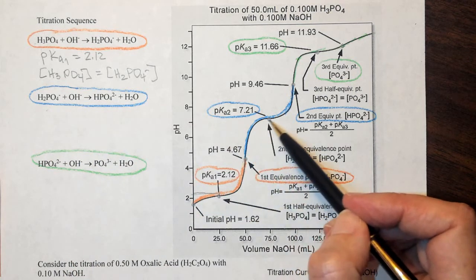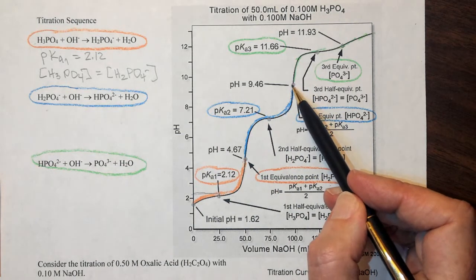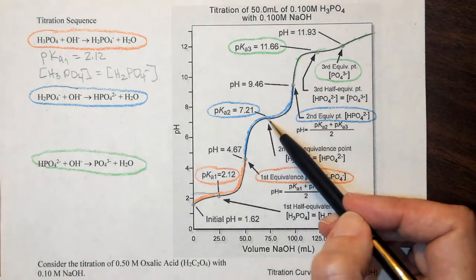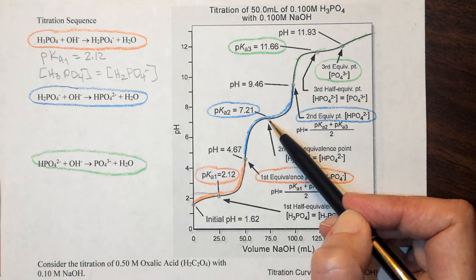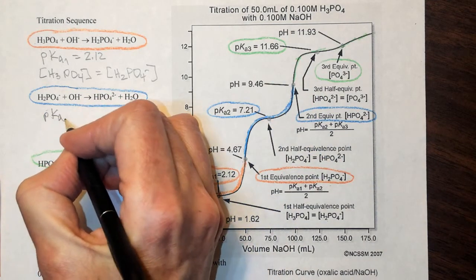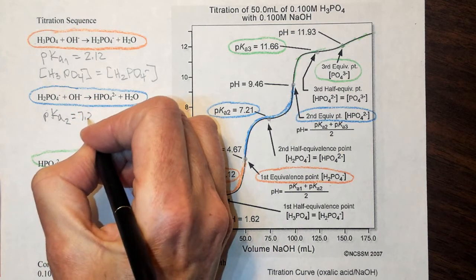So the blue part matches up here. We get to our second equivalence point. If we take the average of these two values, in other words the midpoint, we have our second half equivalence point. And so our pKa for the second step is going to be equal to 7.21.